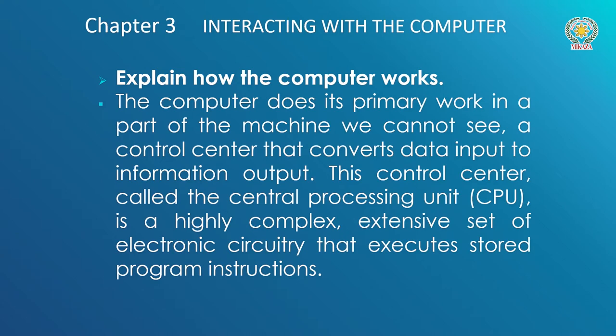Explain how the computer works. The computer does its primary work in a part of the machine we cannot see, a control center that converts data input to information output. This control center, called the central processing unit (CPU), is a highly complex, extensive set of electronic circuitry that executes stored program instructions.